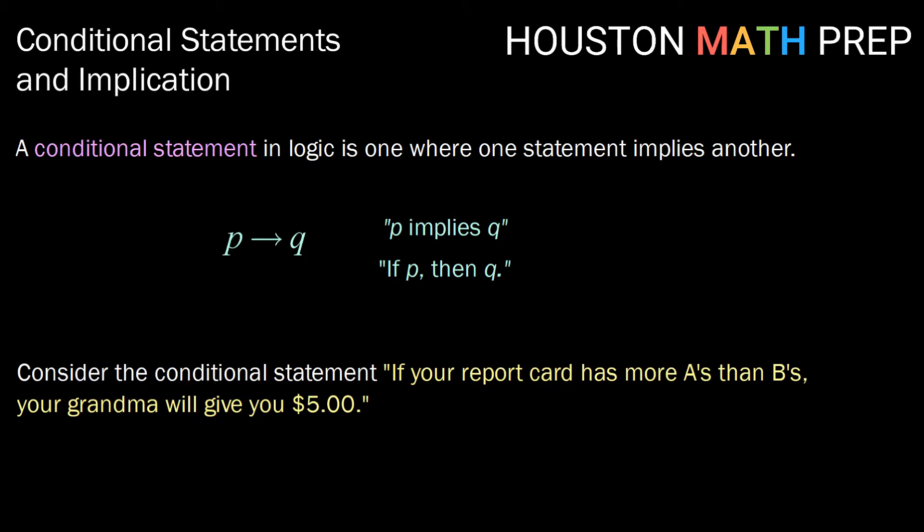So let's consider an example. Consider the conditional statement: if your report card has more A's than B's, your grandma will give you $5. In this case, P is 'your report card has more A's than B's,' and Q is 'your grandma will give you $5.' So here, the outcome of P will tell us about the outcome of Q — P implies Q.